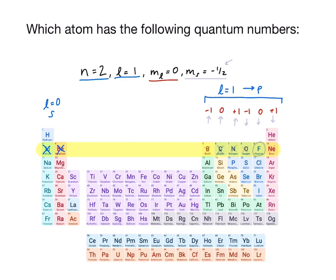We know that m sub l equals 0, so we can eliminate the other options for m sub l, which leaves us with carbon and fluorine. Our last quantum number will help us determine our final answer.